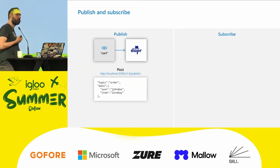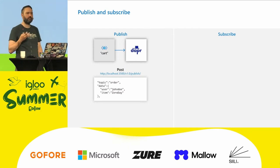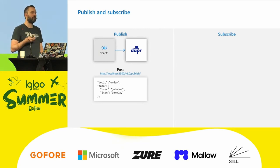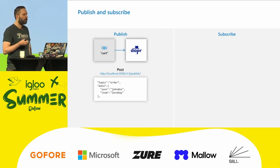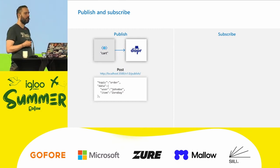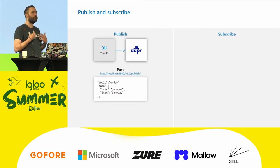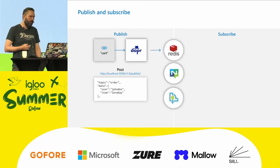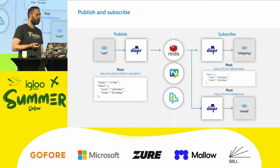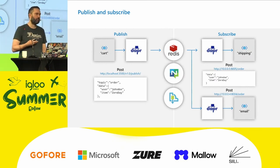Publish-subscribe is also one of those interesting things. I've already shown you Invoke, but when you're using Invoke you have a one-to-one connection and both services have to be alive. PubSub allows you to do something disconnected — maybe your other service is not available, but you can still deliver the payload. You can also do one-to-many consumption: publish only once and multiple sources can consume. The sidecar can publish to whatever bus you want and also subscribe to topics, so your application is notified when something is published.